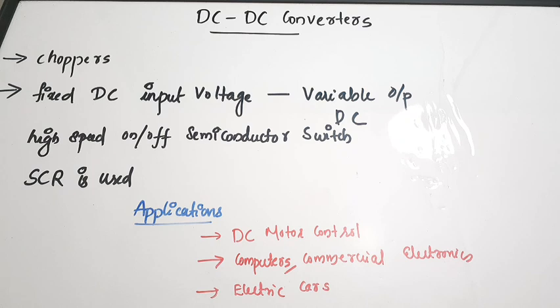In this video we will mainly discuss the basic idea of DC to DC converters, which are choppers, along with the main classifications, circuit diagram, and basic chopper working. There are a lot of variations based on which the working will also vary, and those will be discussed in the upcoming videos.